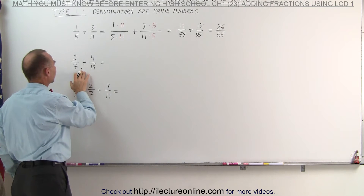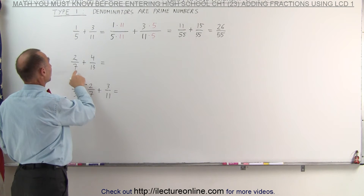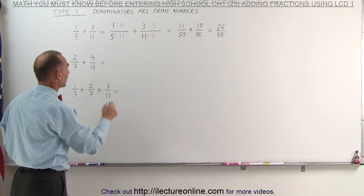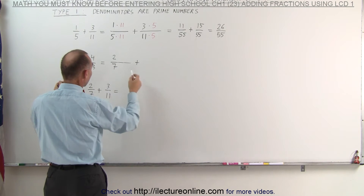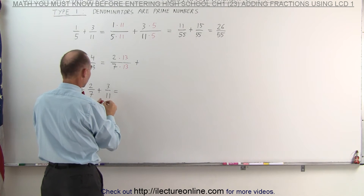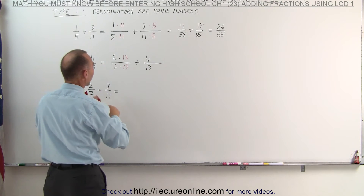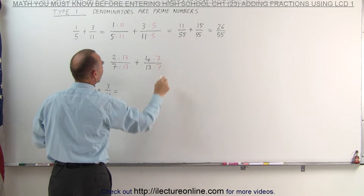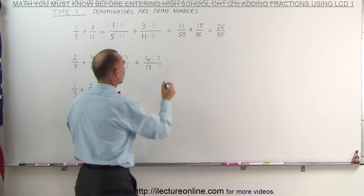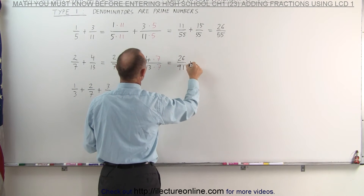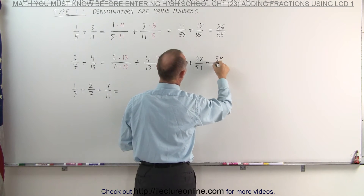On our second exercise here, we can see again that the denominators are prime numbers, which means the lowest common denominator is simply the product of the two denominators. We're going to take the first fraction and multiply it times the denominator of the second fraction — both the numerator and the denominator will be multiplied times 13. And on the second fraction, 4 divided by 13, we're going to multiply both the numerator and the denominator by 7. Both denominators are now equal: 7 times 13 is 91. The two fractions become 26 over 91 plus 28 over 91. When we add these together, we get 54 over 91.